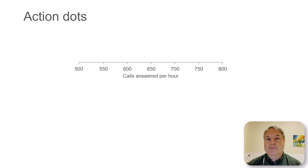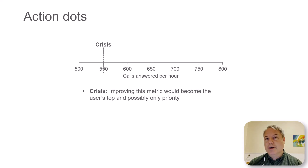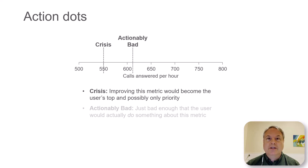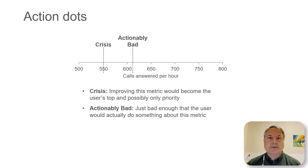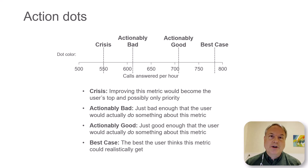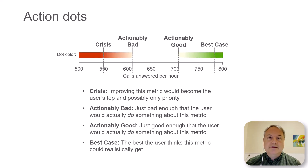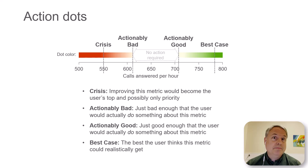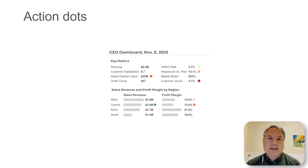For each metric we need four thresholds. The first is called crisis — the point where if it ever got this bad, we would basically just drop everything until this metric improved. Then we have what I call actionably bad — the point where we're not just unhappy, we're so unhappy we're going to do something: cancel the project, launch an investigation, whatever. Then we have actually good — the mirror opposite — where if it ever got to this point we would be so happy we'd do something about it: promote somebody, move more money into the project. And then we have best case — realistically, how good do we think this metric could ever get? Anything in between actionably bad and actually good doesn't get a dot, because it requires no action by definition. That's why on a display like this the majority of metrics don't have a dot — most metrics don't require action most of the time.